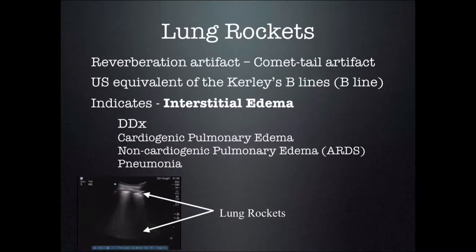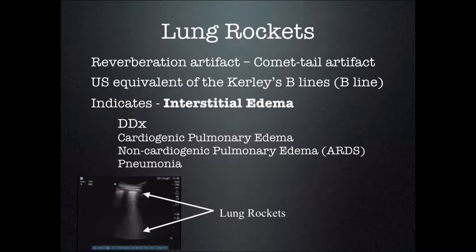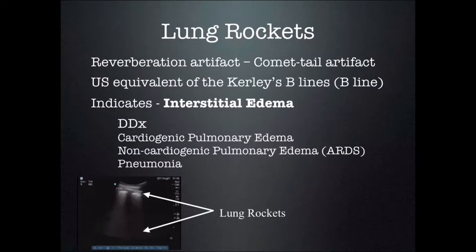This reverberation artifact or comet tail artifact is the ultrasound equivalent of a Kerley B-line — that is where it gets the name B-line — and it indicates interstitial edema. It doesn't tell you what the interstitial edema is from. It could be from cardiogenic pulmonary edema, non-cardiogenic pulmonary edema or ARDS, or it can be from pneumonia. You have to use other information to tell the difference between these three.